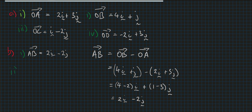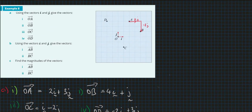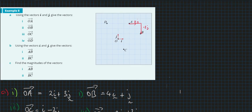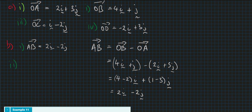You could do something similar with part two: B to C equals O to C subtract O to B. That's one minus four I, so minus three I, and minus two minus one is minus three J. So B to C equals minus three I minus three J, and you can verify that on the graph as well.